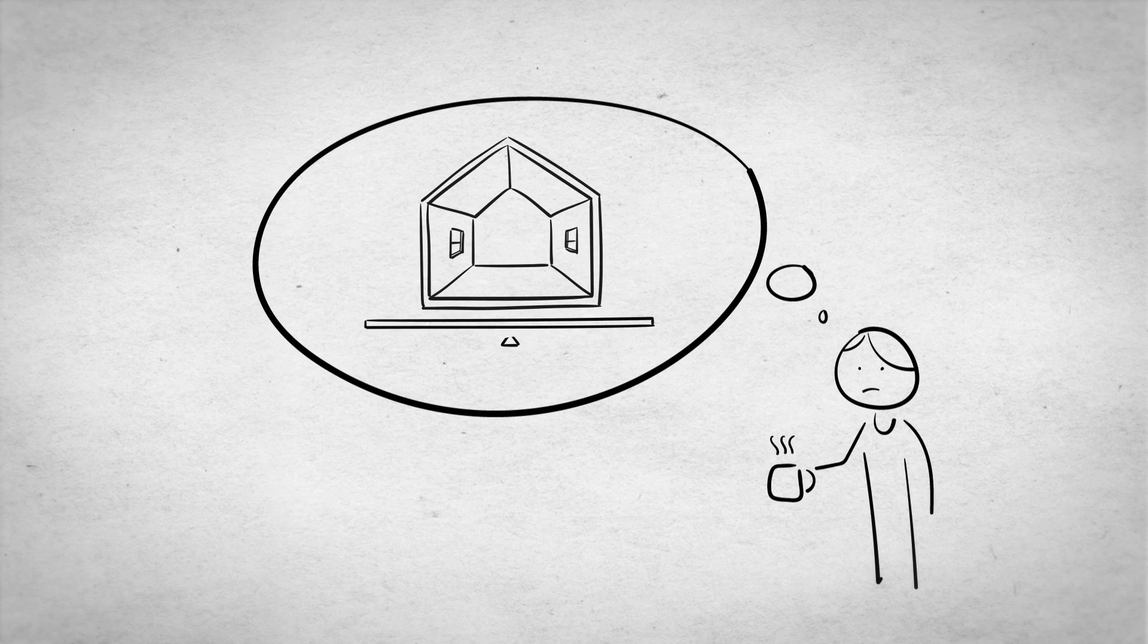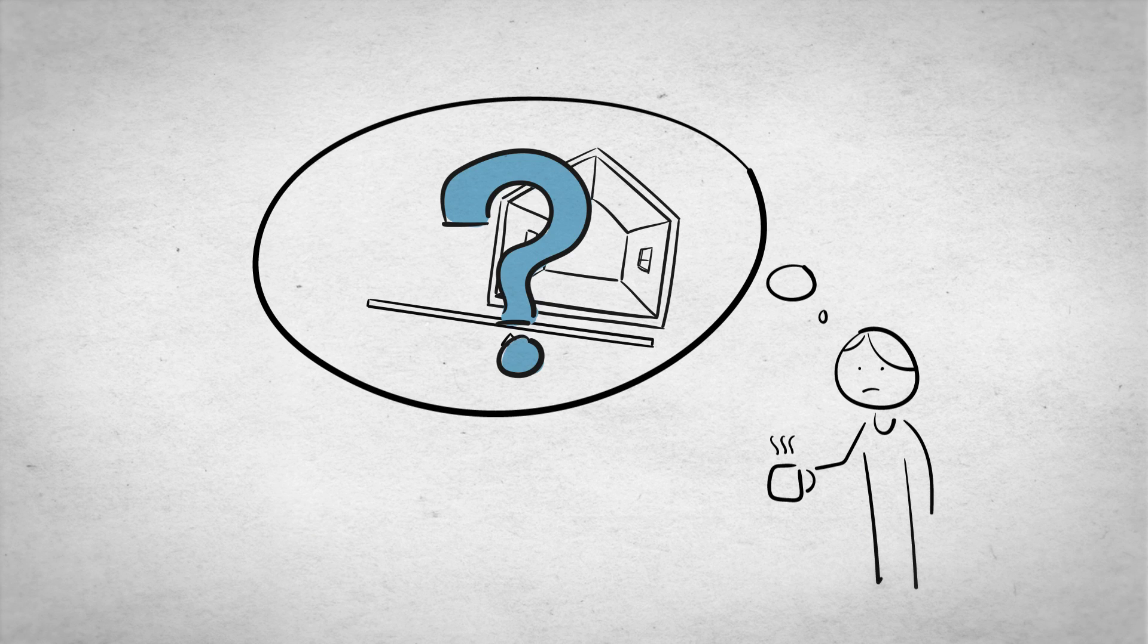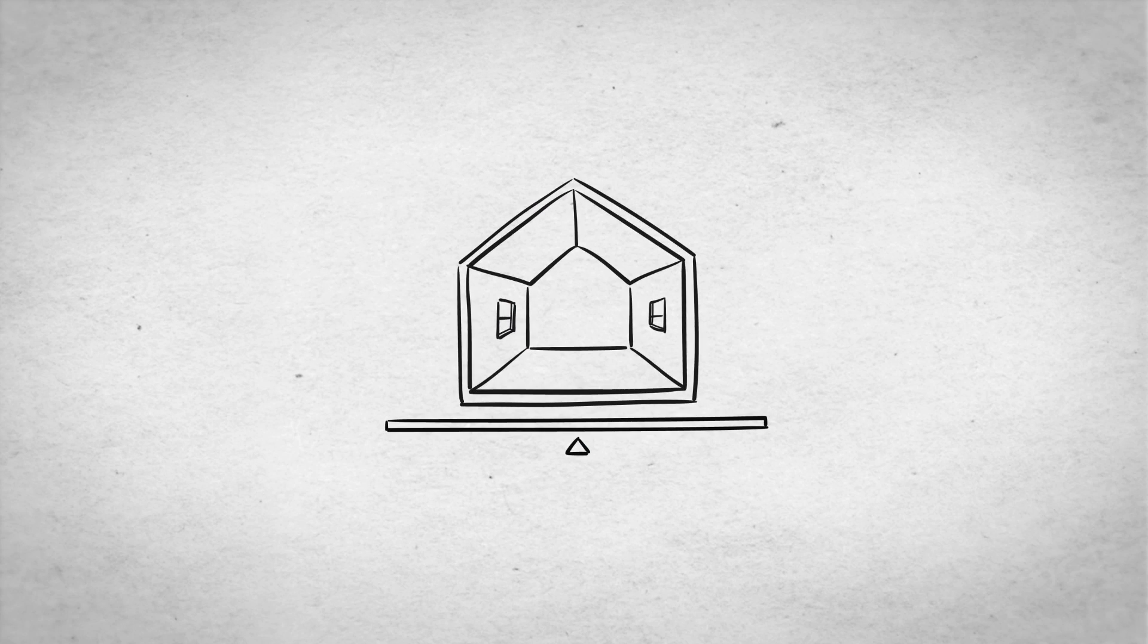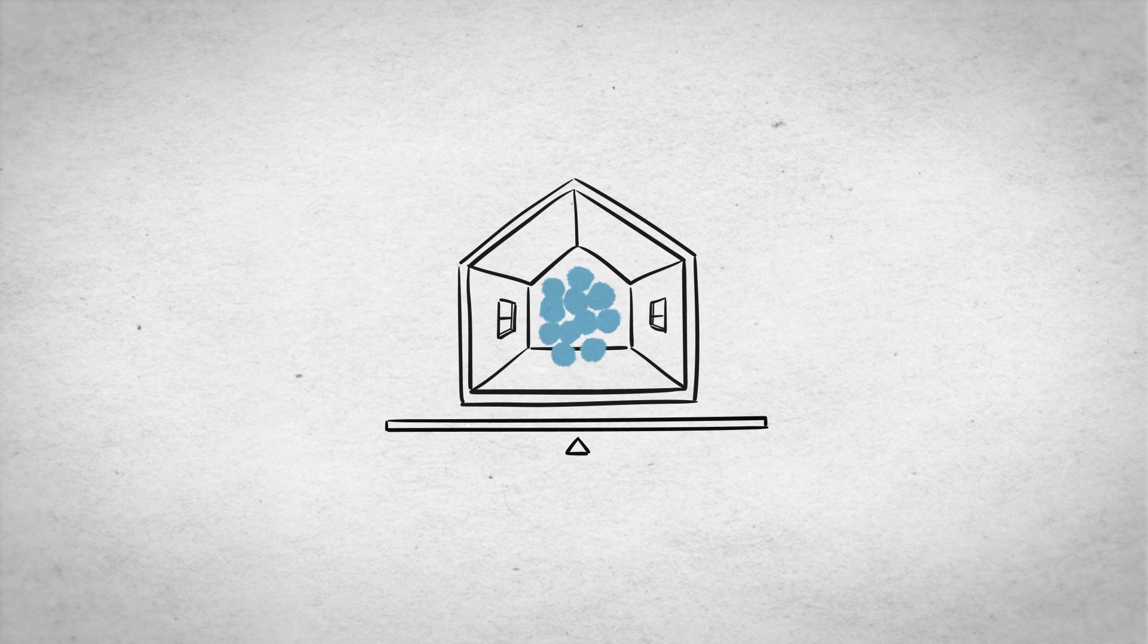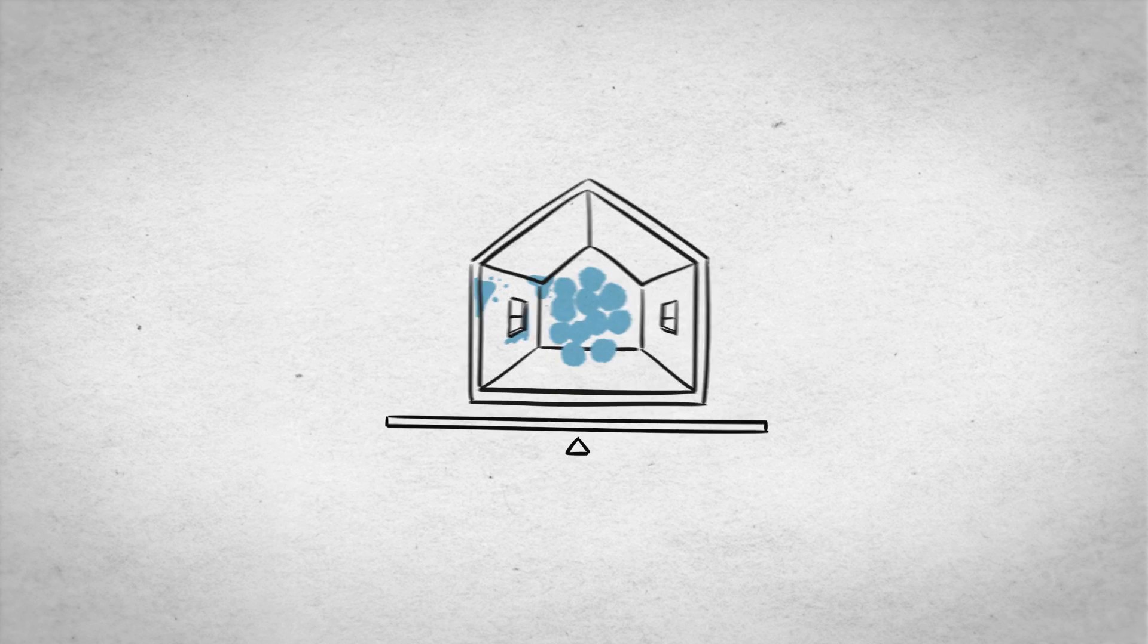But you didn't have a problem before. What's changed? For damp and mould to appear in your home, you need an excess of moisture, visible or not, that leads to an imbalance.